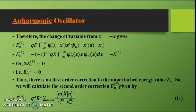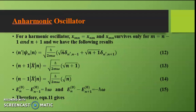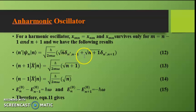Now we calculate the second-order correction En². From perturbation theory, En² = q²E² Σ_{m≠n} |⟨m|x|n⟩|² / (En⁰ − Em⁰). For a harmonic oscillator, the matrix element xmn survives only for m = n−1 and m = n+1, and we have: ⟨n′|x|n⟩ = √(ℏ/2mω) [√n δ_{n′,n−1} + √(n+1) δ_{n′,n+1}].